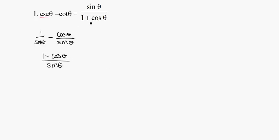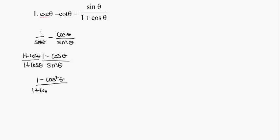Notice I have a 1 plus cosine in the denominator, but I don't have a 1 plus cosine down here. So I'm going to multiply by (1 plus cosine theta) over (1 plus cosine theta). Multiplying the numerator gives 1 minus cosine squared theta. I'm not going to distribute this denominator because I want to keep that 1 plus cosine, so: 1 plus cosine theta times sine theta.